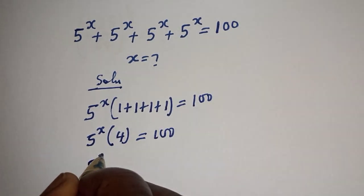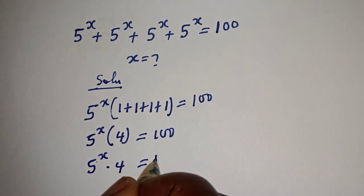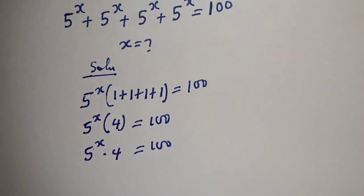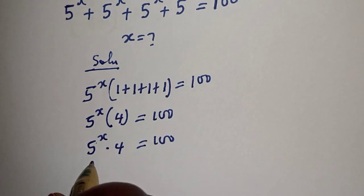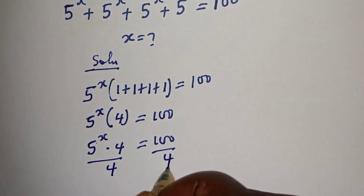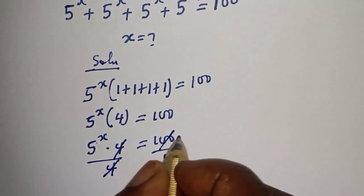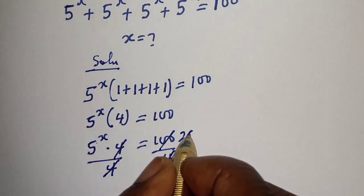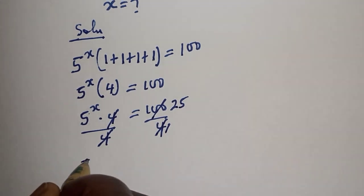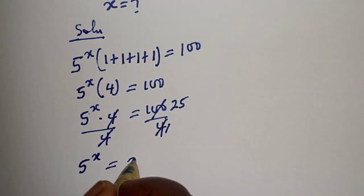5 raised to power s multiplied by 4 is equal to 100. Let's divide both sides of this equation by 4. This cancels, giving us 5 raised to power s is equal to 25.